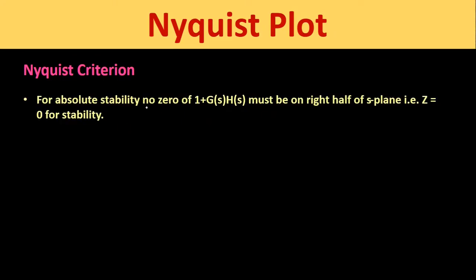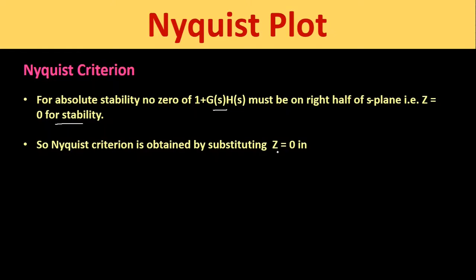For absolute stability of the system, no zero of 1 + G(s)H(s) must lie in the right half of the s-plane, meaning the number of zeros in the right half of the s-plane should equal zero. So the Nyquist criterion is obtained by substituting Z = 0 into the equation N = Z - P, giving N = -P. This is the condition that must be satisfied under the Nyquist criterion.